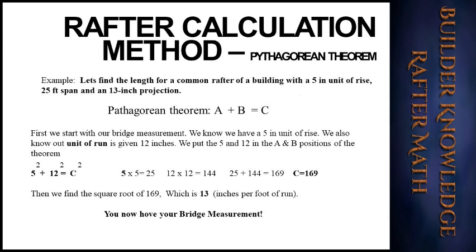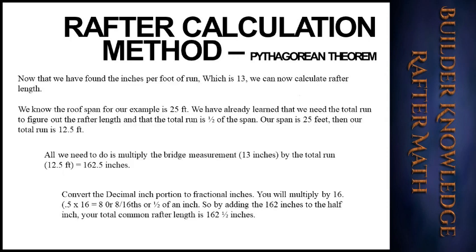5 × 5 is 25, and 12 × 12 is 144; added together the total is 169. Next we find the square root of 169, which is 13. You now have your bridge measurement. With the bridge measurement of 13 inches per foot of run, we can now calculate rafter length. The roof span for our example is 25 feet. We need the total run, which is half the span — so our total run is 12.5 feet.